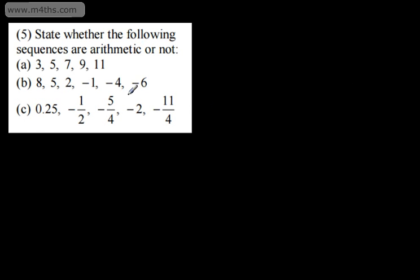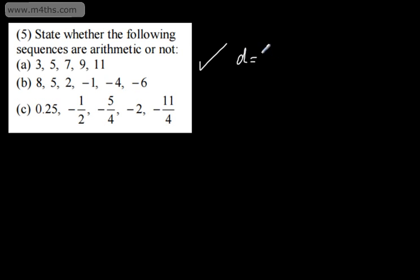We're going to start by looking at whether a sequence is arithmetic or not. Question 5, part A: 3, 5, 7, 9, 11. We're adding 2 each time — yes it is arithmetic! We have a common difference of positive 2.